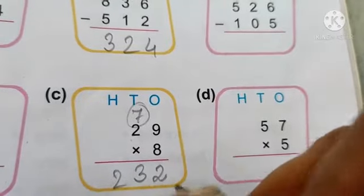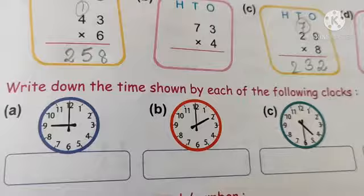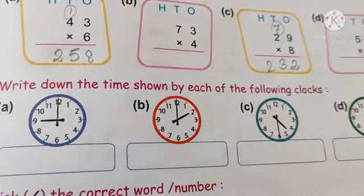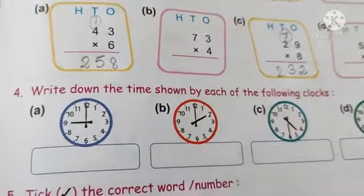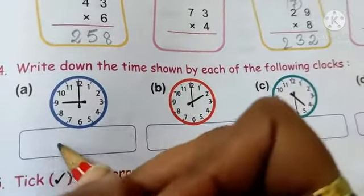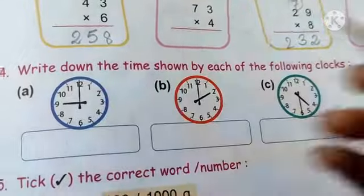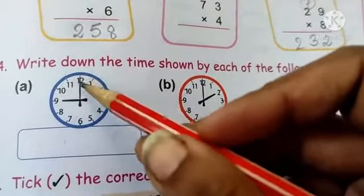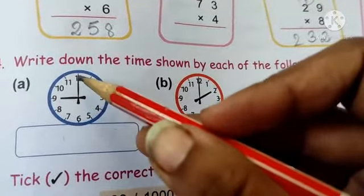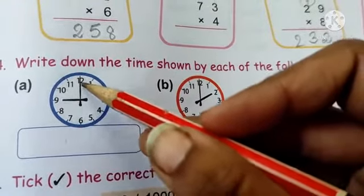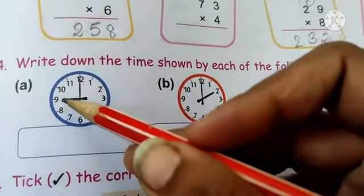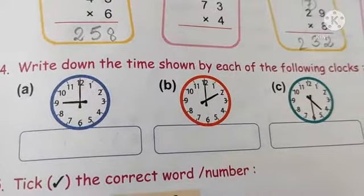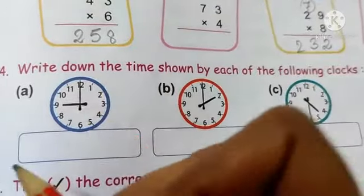Write down the time shown by each clock. Clock a: the minute hand is on twelve and the hour hand is at nine — so it is nine o'clock.